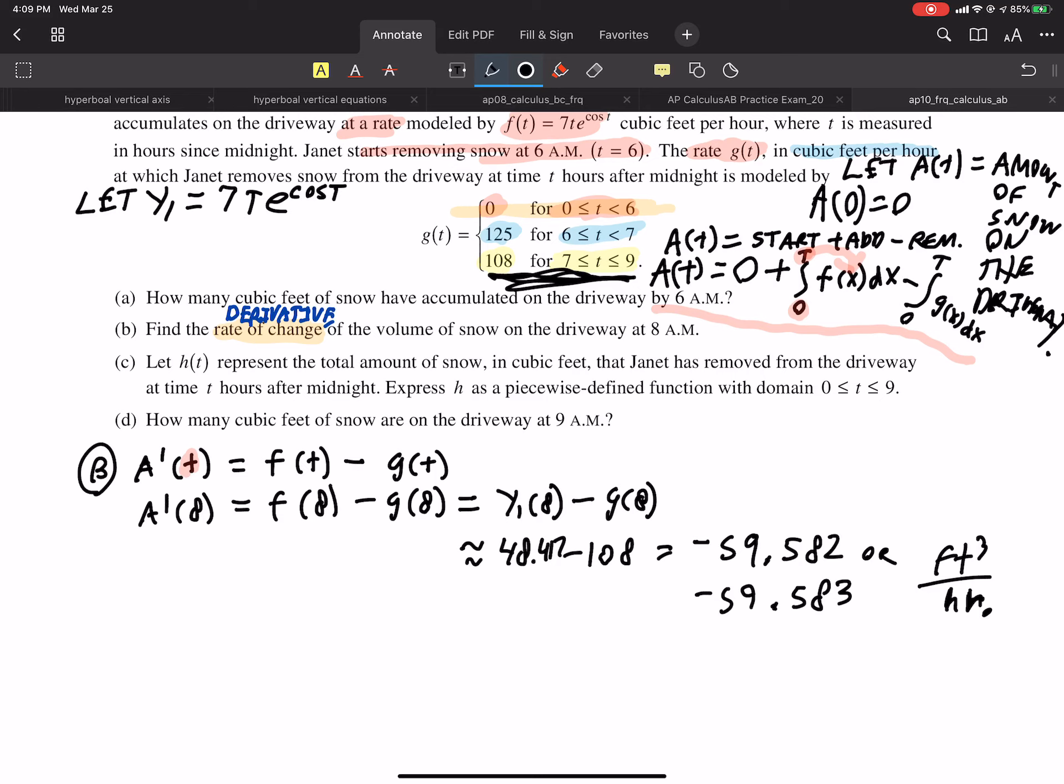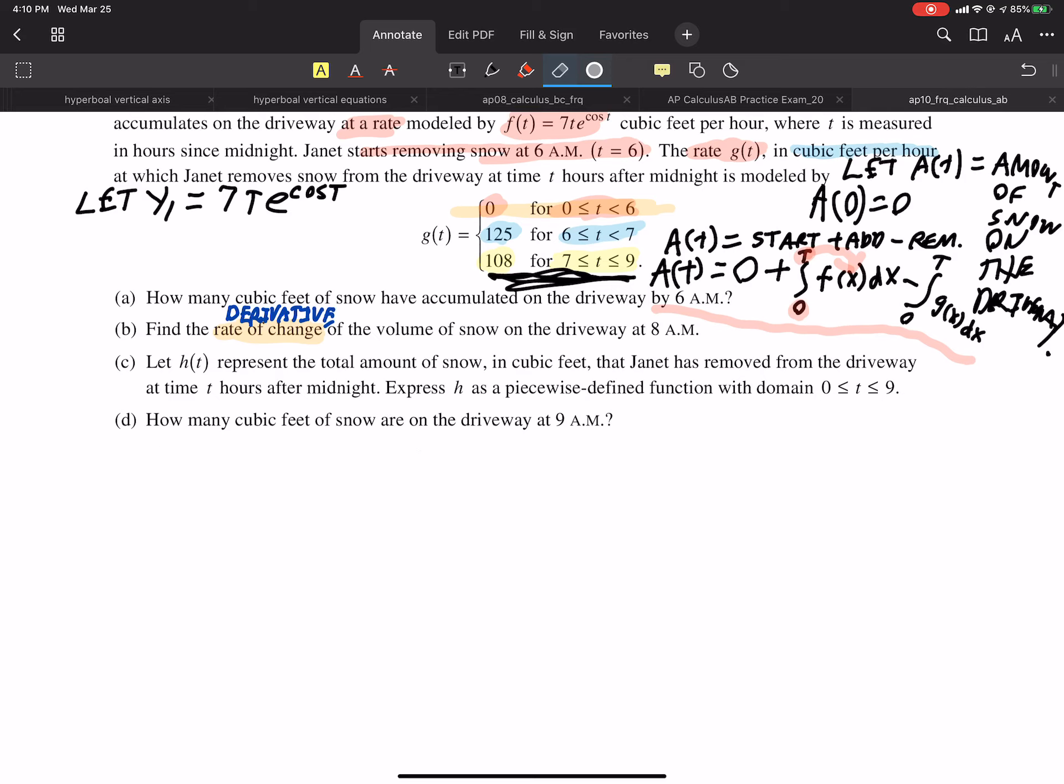All right. Let's go to the next question. Let me see. H of T represents the total amount of snow in cubic feet that janitors remove from the driveway. Express H is a piecewise function with domain 0 to 9. Okay. This is the one that's going to blow your minds because you really don't know what it's asking for. Maybe you do. The piecewise function is kind of weird. But basically, we want the amount of snow removed at any particular time. So H of T, this is going to be pretty easy for the first six hours. From 0 to 6, it's a constant rate of 0. So if you want a function that tells you how much snow she's removed, that's just going to be 0 for the first six hours.